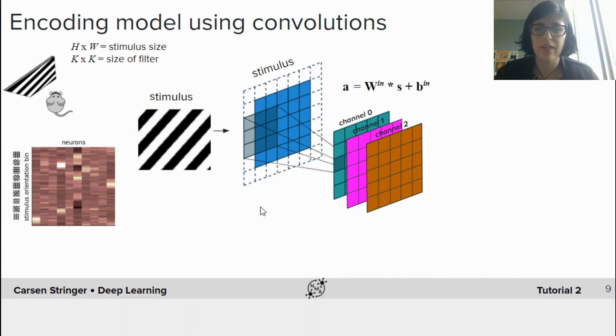So we're going to take our convolutional layer that we created in the previous section of the tutorial and we're going to add a fully connected layer here. This convolutional layer takes as input a stimulus which is size H by W and has some filter size K by K. We've set the padding and the stride such that the output is the same size as the input.